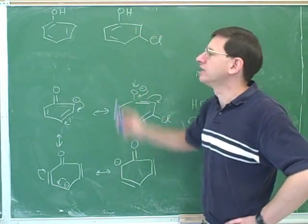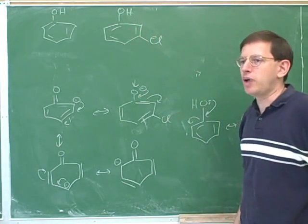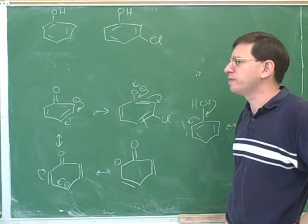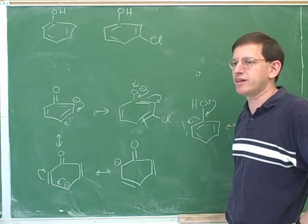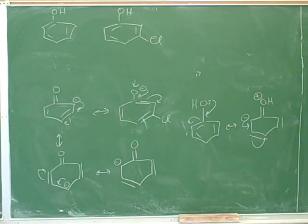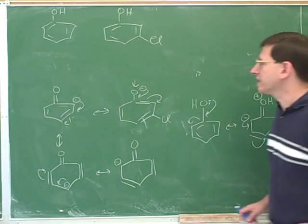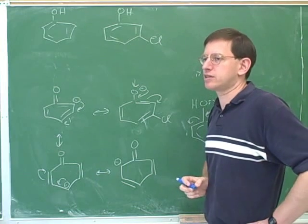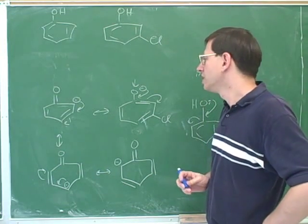Where would we put the chlorine to make this the most acidic? Should we put it at the O and P positions or at the M positions? At the O positions. That's right, or the P positions. Why? Because since chlorine is electron withdrawing, it's going to be most effective when it's as close as possible to the negative charge.